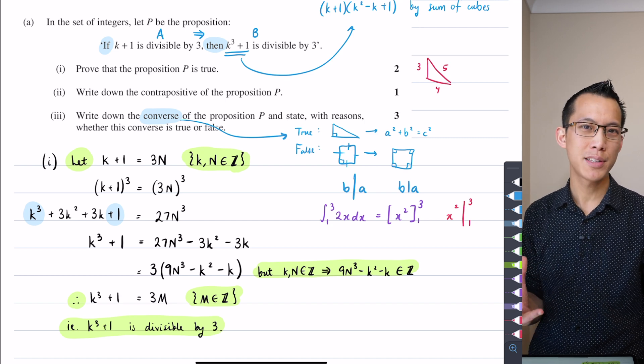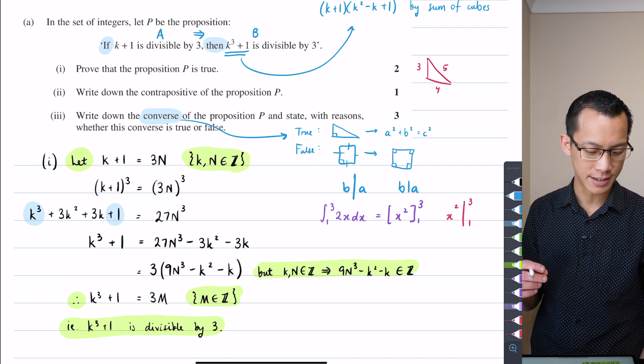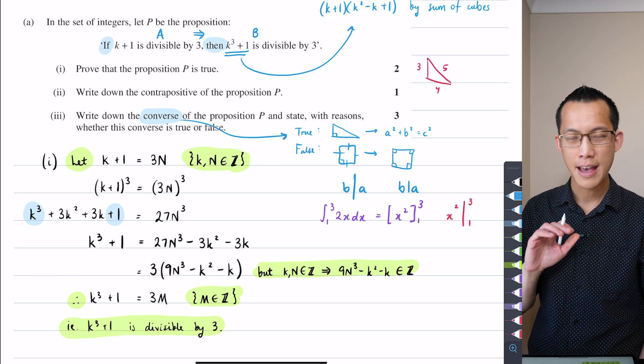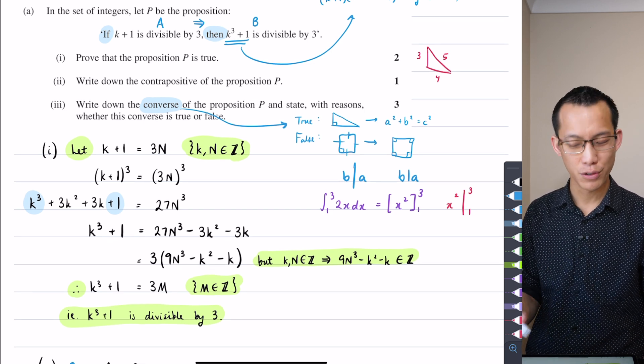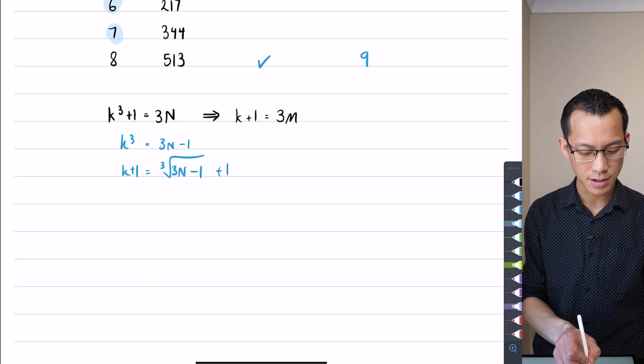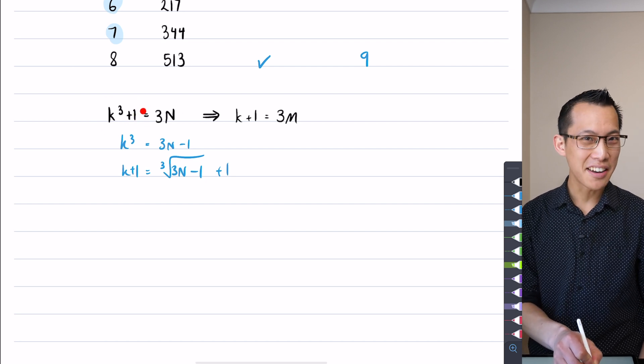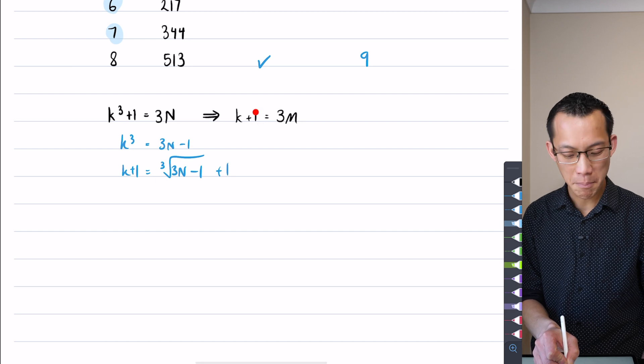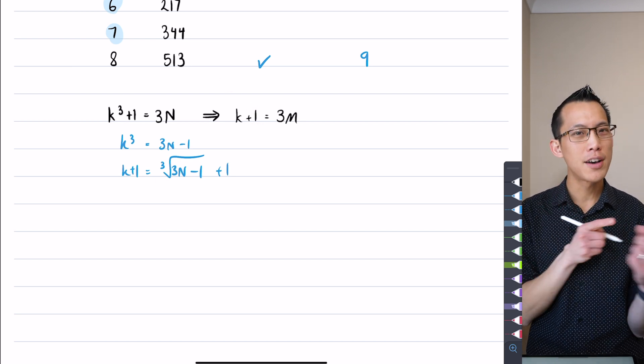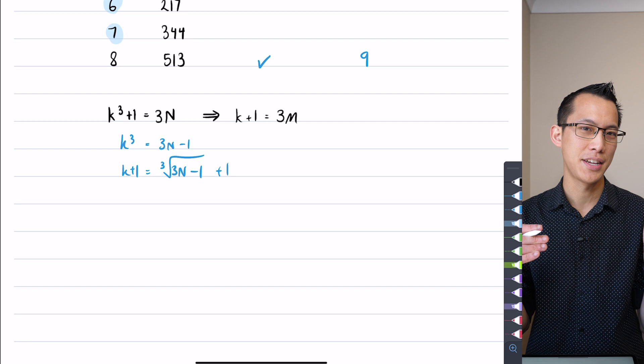Part three doesn't give you a big slap in the face clue. It doesn't say hence or otherwise prove blah, blah, blah. But the mere presence of part two, which doesn't seem to flow off of part one in any obvious way, should clue you into the fact that it might be useful. The problem is that going from a K^3+1 expression, it's pretty hard to get to a K+1 expression, but the reverse is not true. And that's what the contrapositive does, right? It reverses the flow of logic from A implies B, we get not B implies not A.